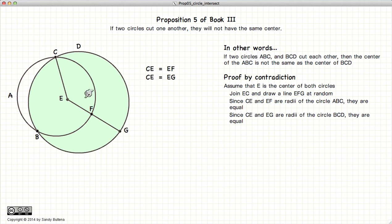By the same token, since EC and EG are radii of the same circle, in other words, E is the center of this big circle, then CE is equal to EG.